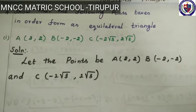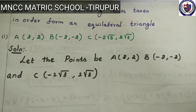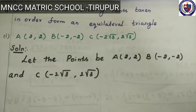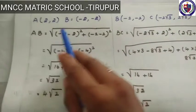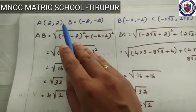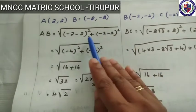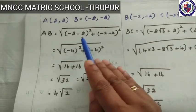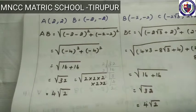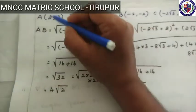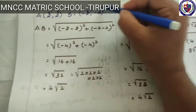Solution: let the points be A(2,2), B(-2,-2), C(-2√3, 2√3). So first point A is (2,2), then B is (-2,-2). AB is equal to the distance formula: √[(x2 - x1)² + (y2 - y1)²]. Let the first point be x1, y1 and the second x2, y2.